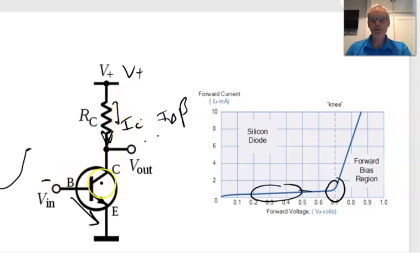So with no current going in, this output will be effectively at this V plus level because there's no voltage drop across RC. Now when this transistor is fully switched on and we've got IC flowing, we get a voltage drop across the RC resistor, which means whatever's left here is V plus minus the VRC.